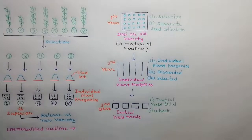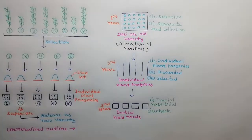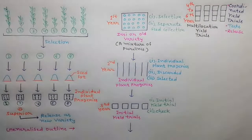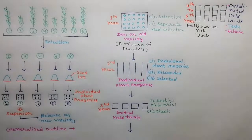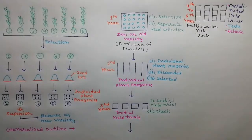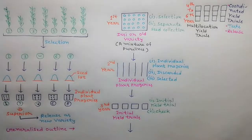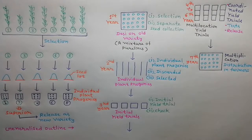In the third year, initial yield trials are held for superior progenies. A prevalent superior variety is used as a check. In the fourth to sixth year, coordinated yield trials are organized for superior progenies. Disease resistance and quality are tested. Most superior progenies are released as a new variety. In the seventh year, seeds of the released variety are multiplied and distributed to farmers.